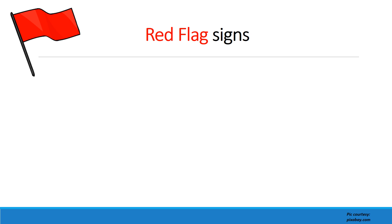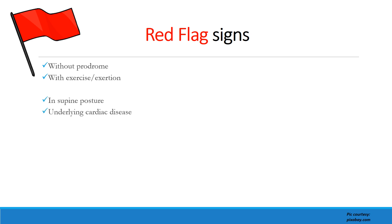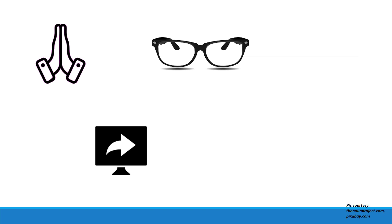Red flag signs of syncope — when syncope should not be considered benign and specialist opinion or further workup is required — include: syncope without prodrome (typically cardiac or neurological), syncope with exercise or exertion, syncope in supine posture, history of underlying cardiac disease, family history of sudden unexplained death, family history suggestive of arrhythmias (e.g., drowning in a person who could swim, or syncope after an auditory stimulus), and family history of epilepsy. We should now be more clear about how to approach a patient with syncope.